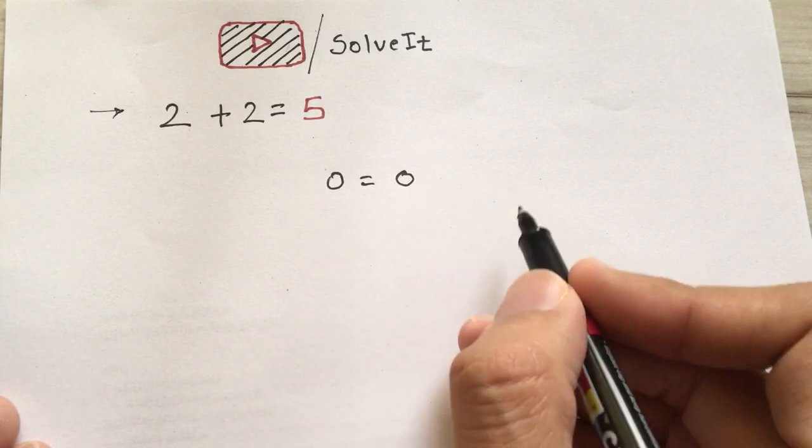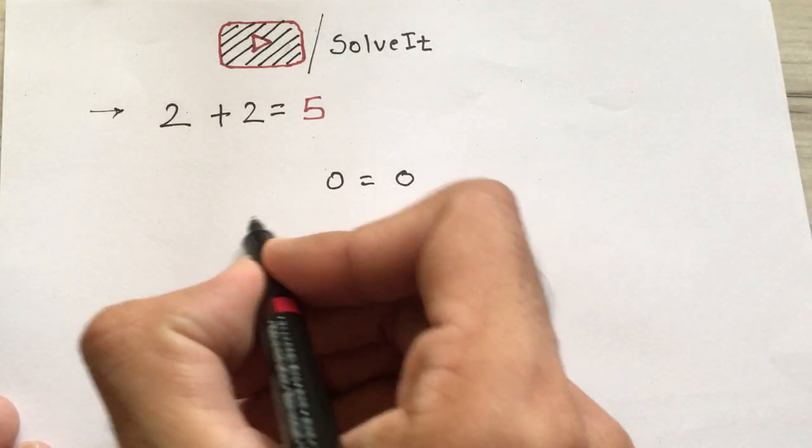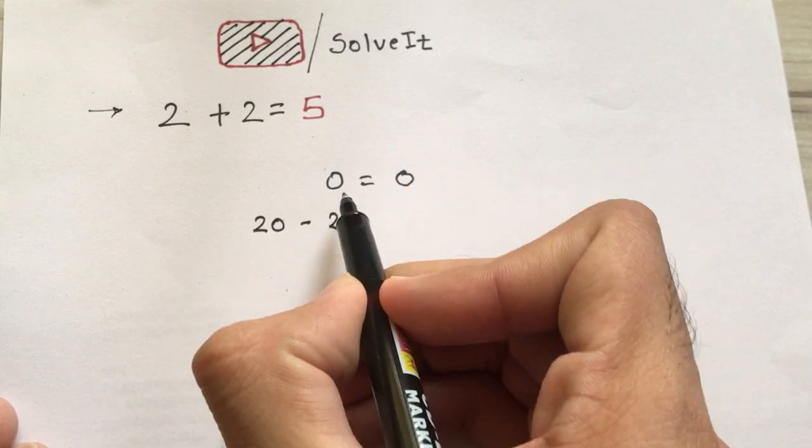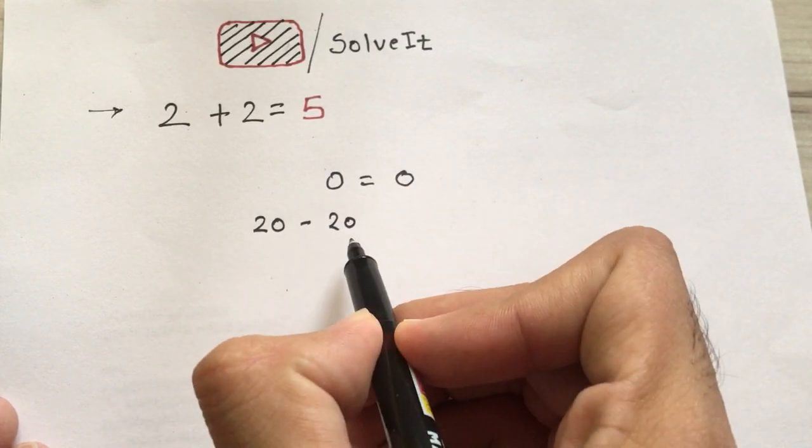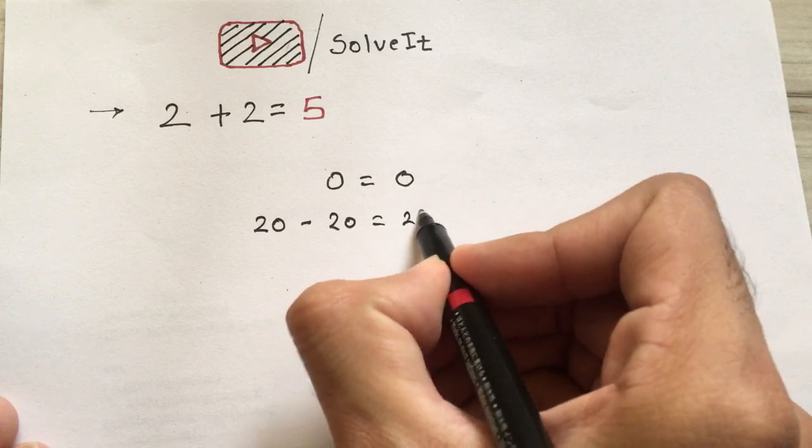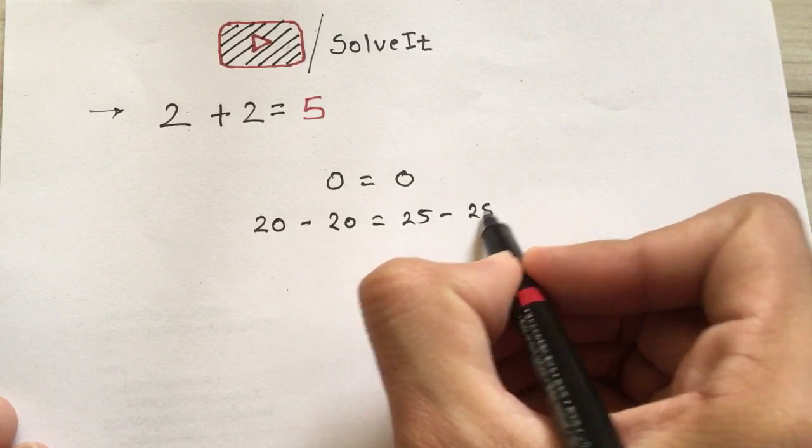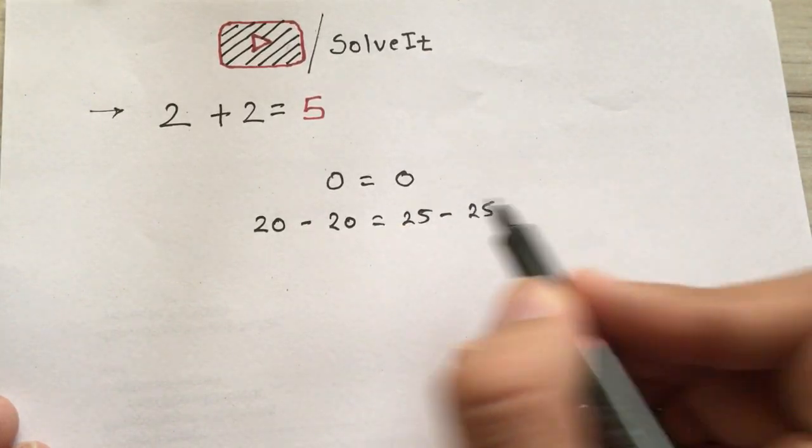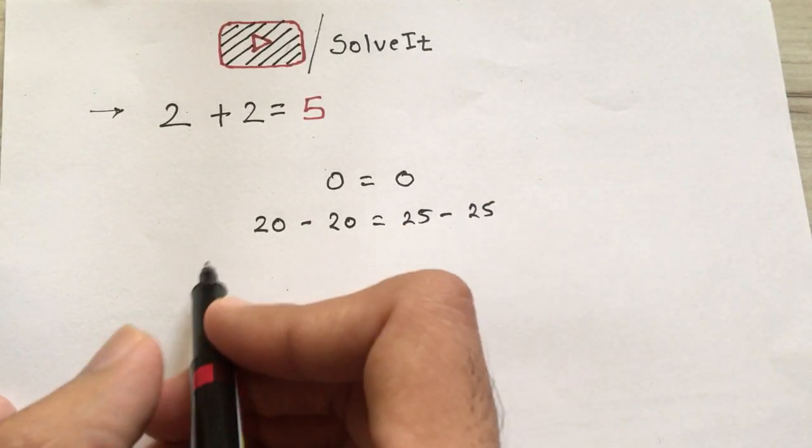Let's see, 0 equals 0, we can see that's true, no problem. So next, 20 minus 20. We can write 0 as 20 minus 20, and it will be equal to 25 minus 25. You see, 20 minus 20 is 0, 25 minus 25 equals 0. No problem till yet.